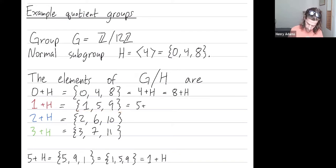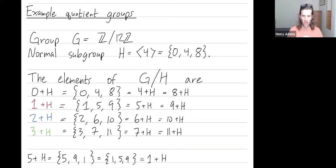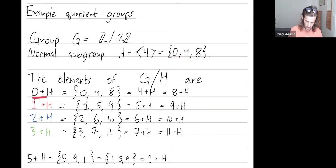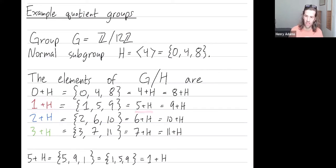In summary, the group G has 12 elements and the subgroup H has 3 elements, so the number of cosets is 12 divided by 3, which is 4. Here are my 4 cosets. These cosets might have multiple names — we saw how 0+H is the same as 4+H, and 1+H is the same as 5+H, etc.